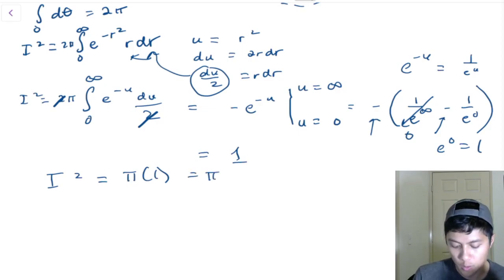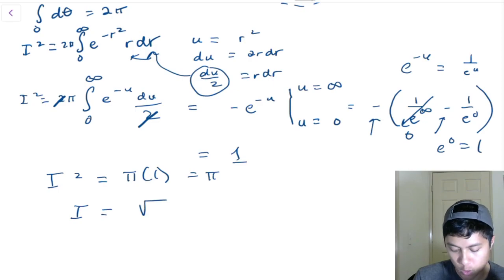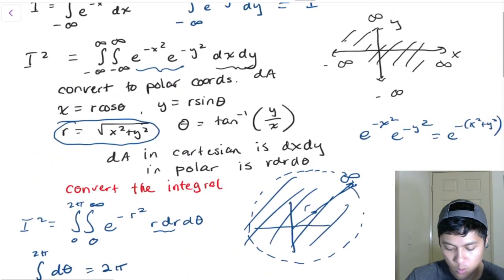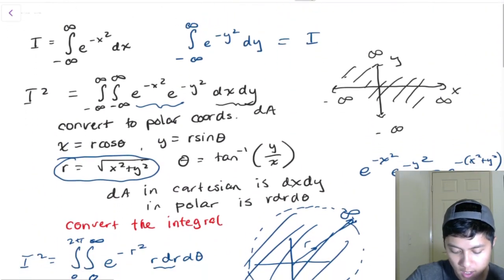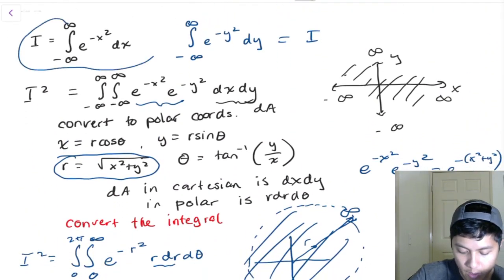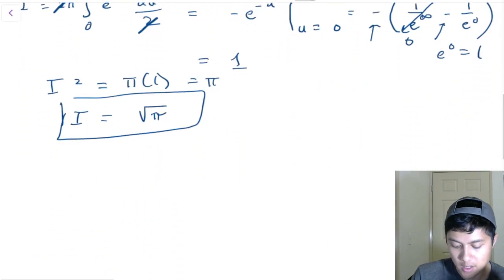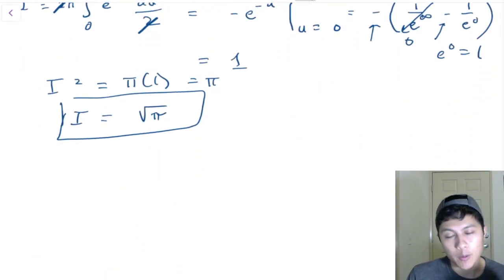Hence, we now know that i is equal to the square root of pi. So the answer to this integral — the Gaussian integral — is just the square root of pi. I hope you enjoyed this video. I hope you learned something new today, and tune in next time for more math videos.